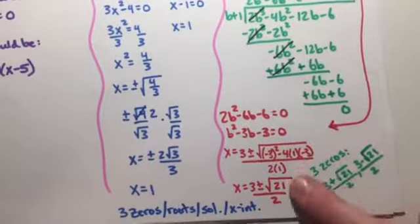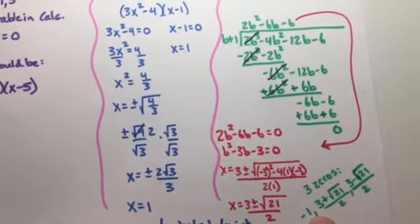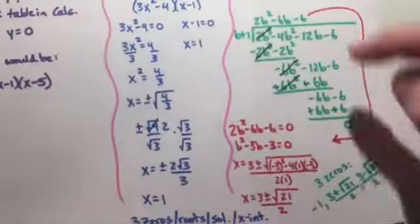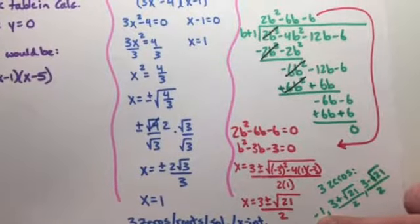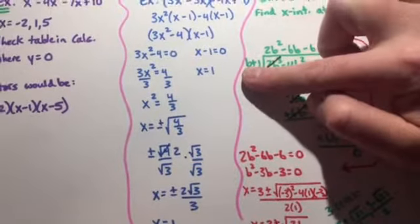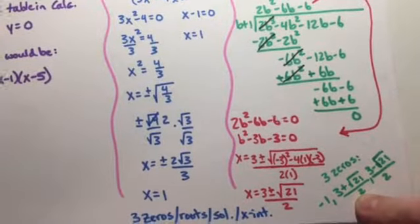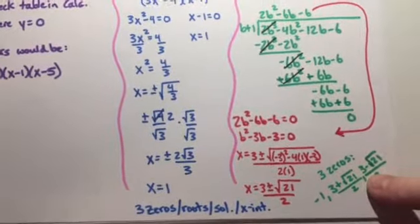And then I put everything together over here. So I have three zeros, which makes sense, because I do have a cubic function. I have a zero at -1—that's what we started with, so you don't want to forget that one. And then I have (3 + √21)/2, and (3 - √21)/2.